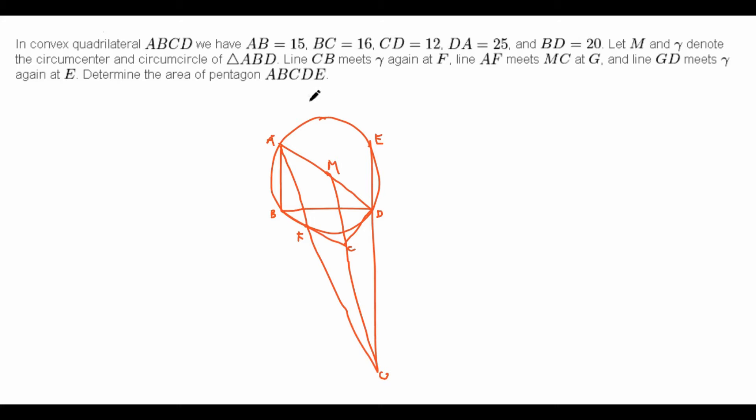Let's first read the problem. In a convex quadrilateral ABCD, we have AB equals 15, BC equals 16, CD equals 12, DA equals 25, BD equals 20. Let M and gamma denote the circumcenter and circumcircle of triangle ABD, which is depicted as below.